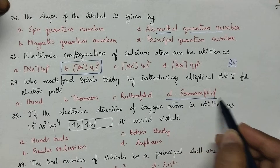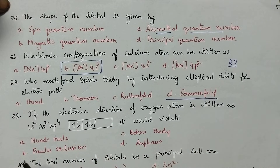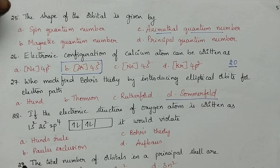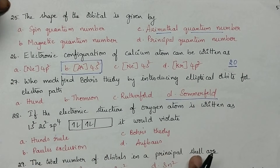Who modified Bohr's theory by introducing elliptical orbits for electron path? Sommerfeld explained the elliptical orbits for electron path.